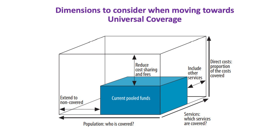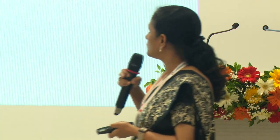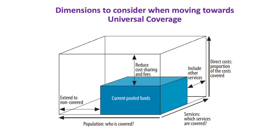When thinking about universal health coverage, key questions arise: whom do we cater to, what is the population, to what extent do we want to cater, what types of services, and whether there is any sharing of costs. There are multiple dimensions when you think of universal health coverage.